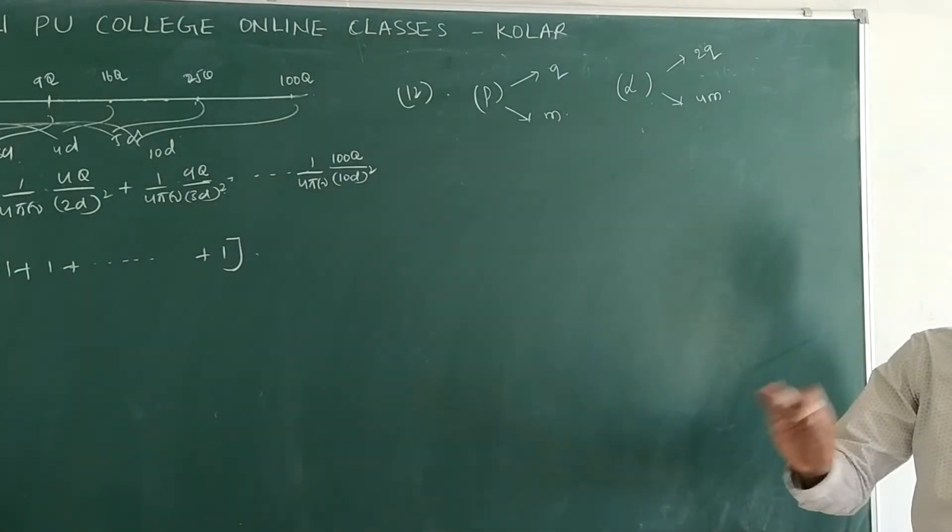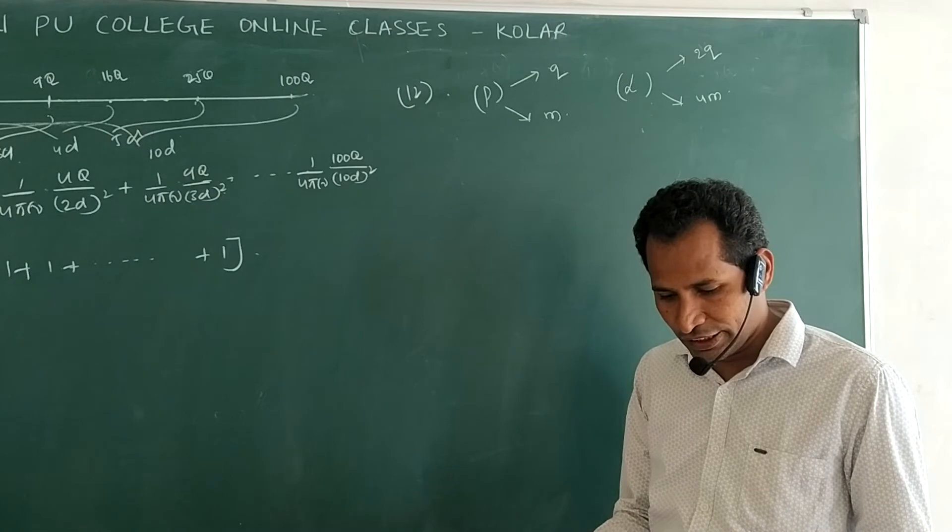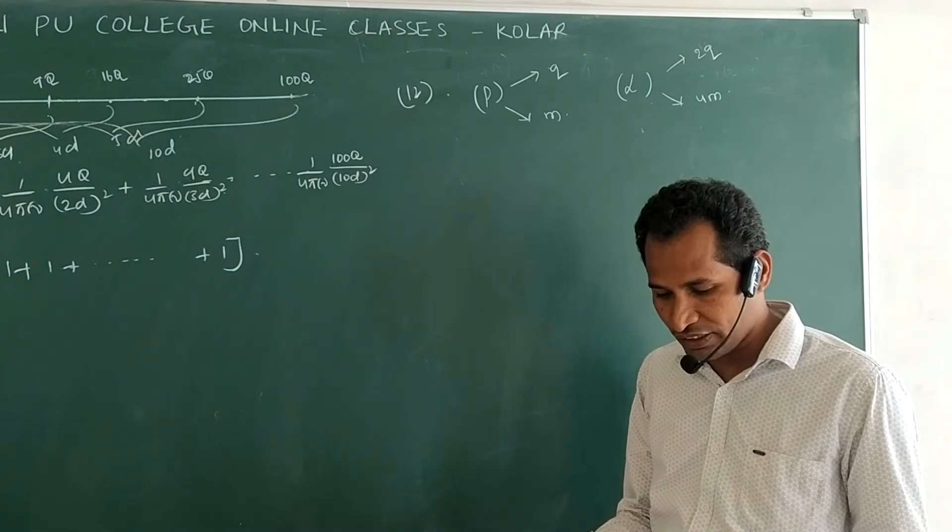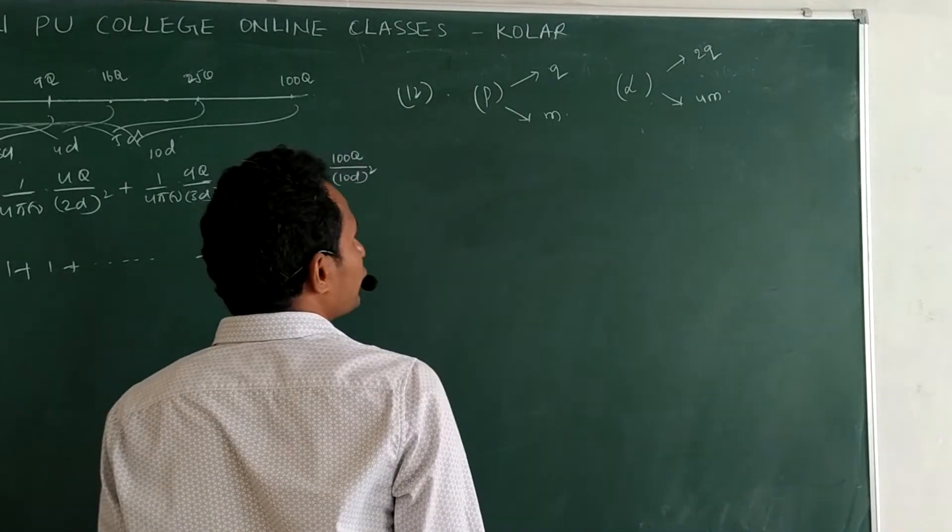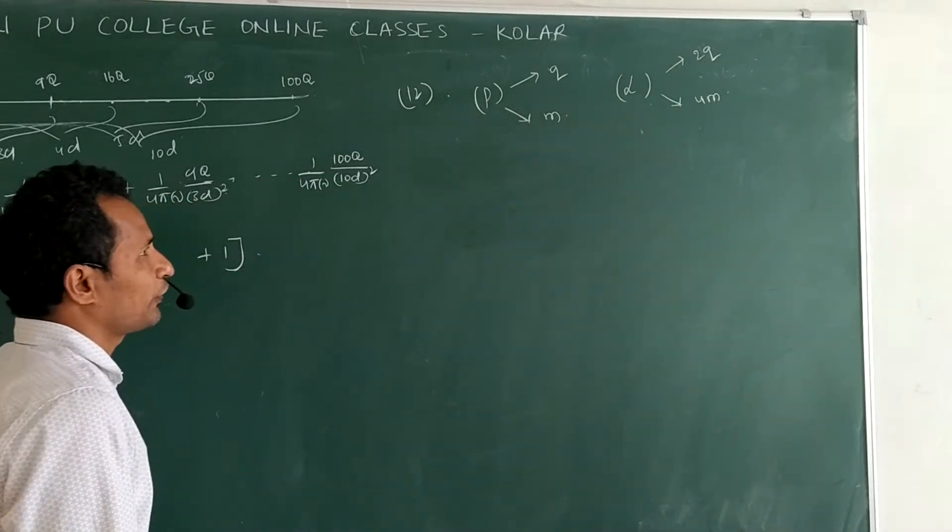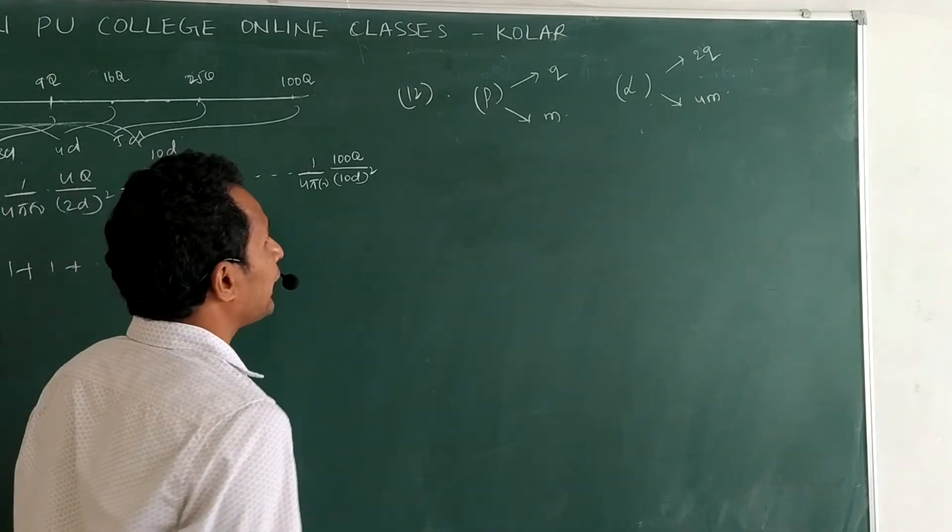Alpha is ionized helium. Remember this point. Now what do they ask? The ratio of velocities after traveling equal distance. Then if we release these two charged particles in an electric field, they experience force and due to that force they accelerate.